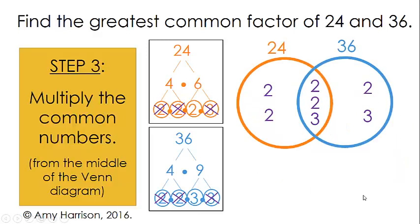Now that we're finished with our Venn diagram, all we have to do is multiply the common numbers, these numbers here in the middle, 2 times 2 times 3.